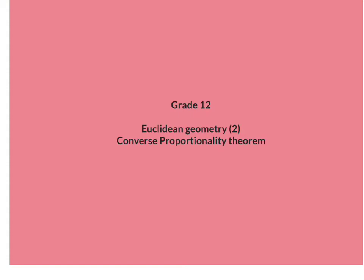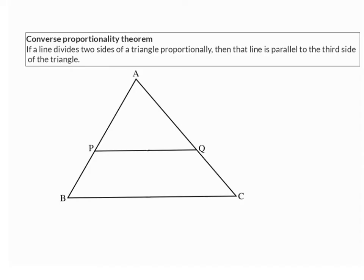In lesson 2 of grade 12 Euclidean geometry, we're going to have a look at the converse proportionality theorem. This theorem states that if a line divides two sides of a triangle proportionally, that line is parallel to the third side of the triangle.